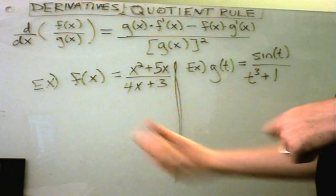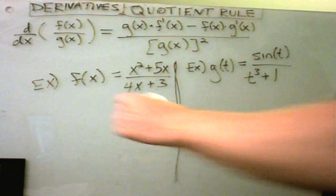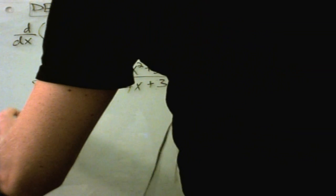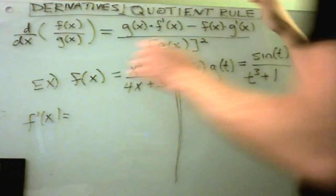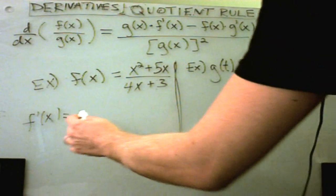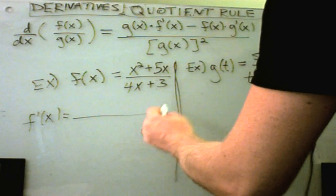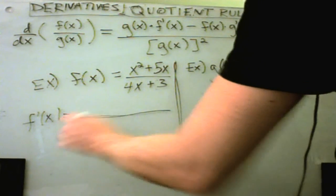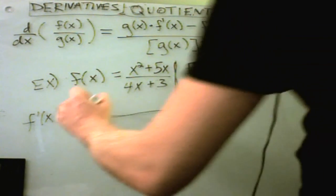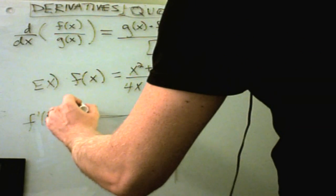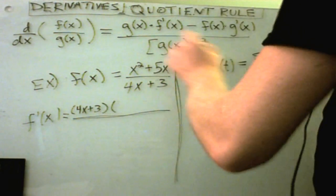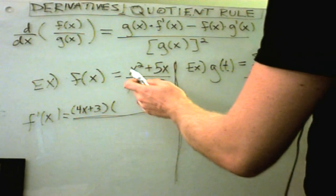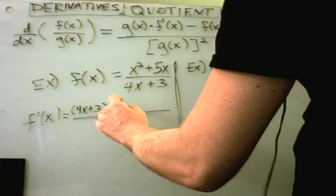we'll start with this first problem on the left. So, the derivative here. Okay, so it says you leave the bottom thing alone. So, 4x plus 3, we'll leave that alone. It says you then multiply that by the derivative of the numerator. So, the derivative of x squared is simply 2x.